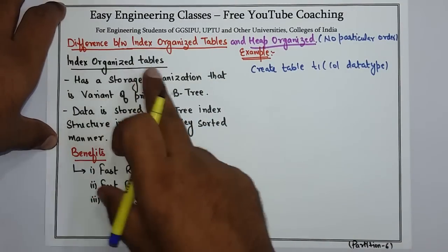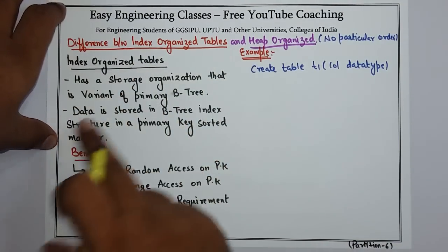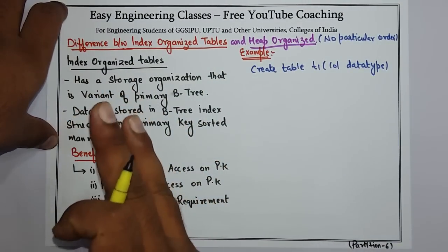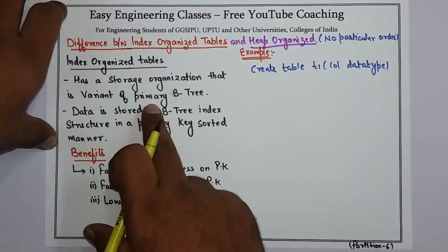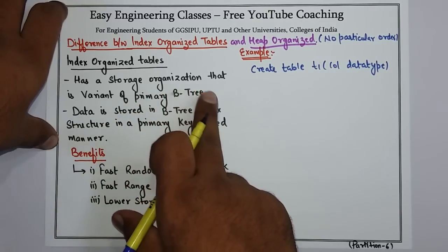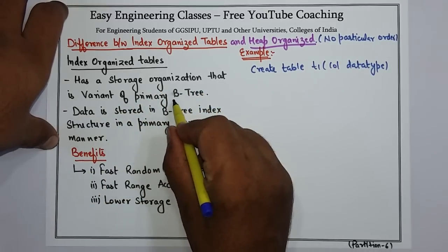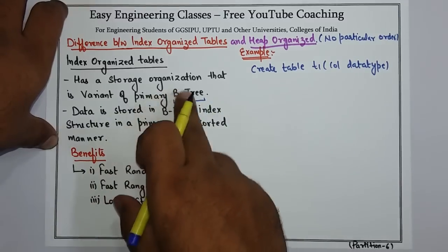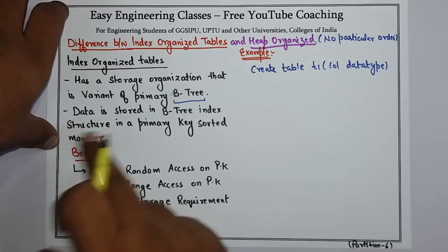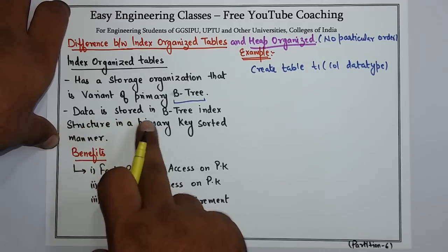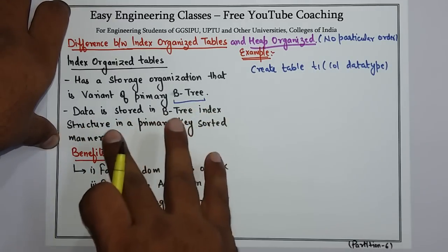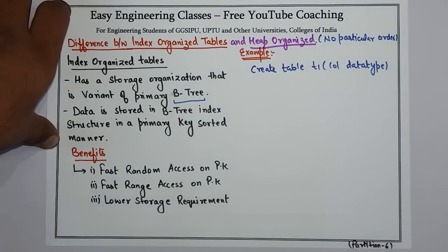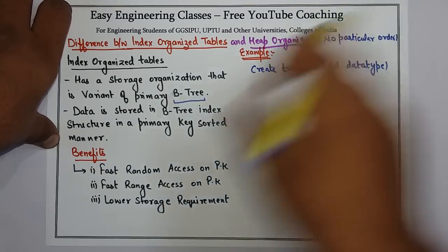Now let's focus on index organized tables. It has a unique structure or a unique storage organization which is a variant of the primary B-tree. Its storage organization is based on the primary B-tree, and data is stored in a B-tree index structure in a primary key sorted manner.